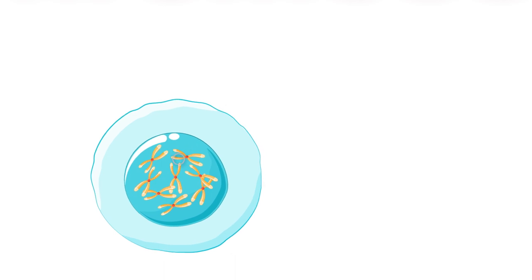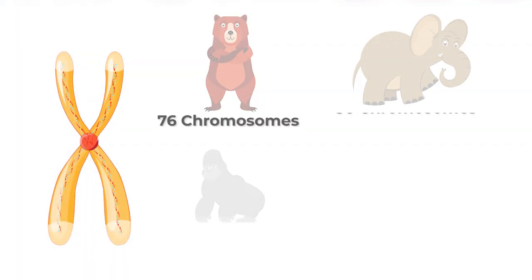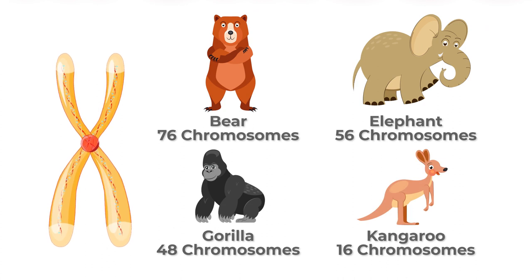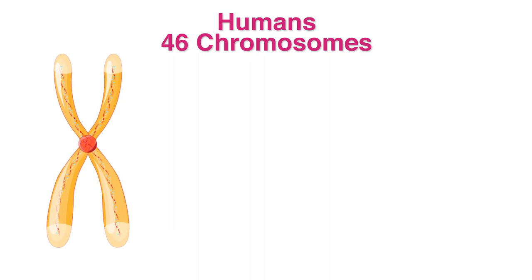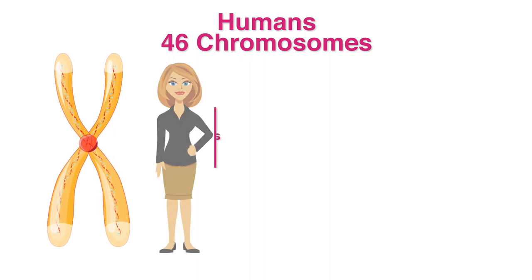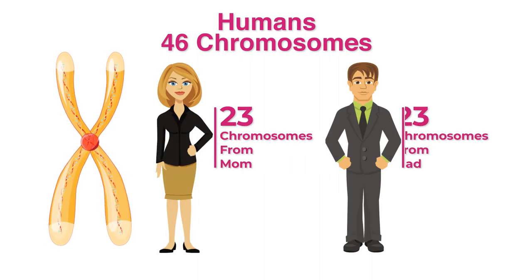If you take a closer look at this nucleus, you'll find odd looking structures called chromosomes. Animals all have different numbers of chromosomes, but for humans, we have 46 chromosomes specifically. We get 23 from our mom and 23 from our dad.